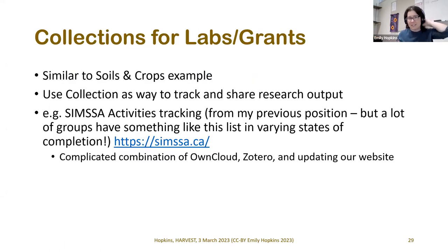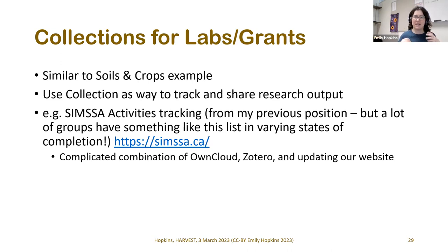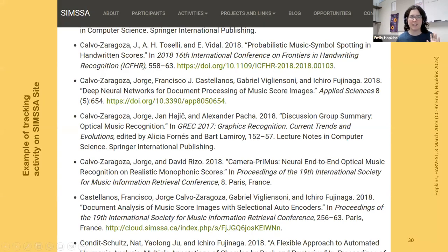Coming back to the idea of labs or grants having collections — similar to the Soils and Crops example — collections are a way to track and share research output. This isn't required; work will still be indexed in Google Scholar and links will still work. But if it's useful to your group, we can set it up. At my previous job I worked on a grant called SIMSA — Single Interface for Music Score Searching and Analysis — and we used a complicated combination of OwnCloud, Zotero citations, and website updates that was hard to keep current. A Harvest collection could be a simpler alternative.